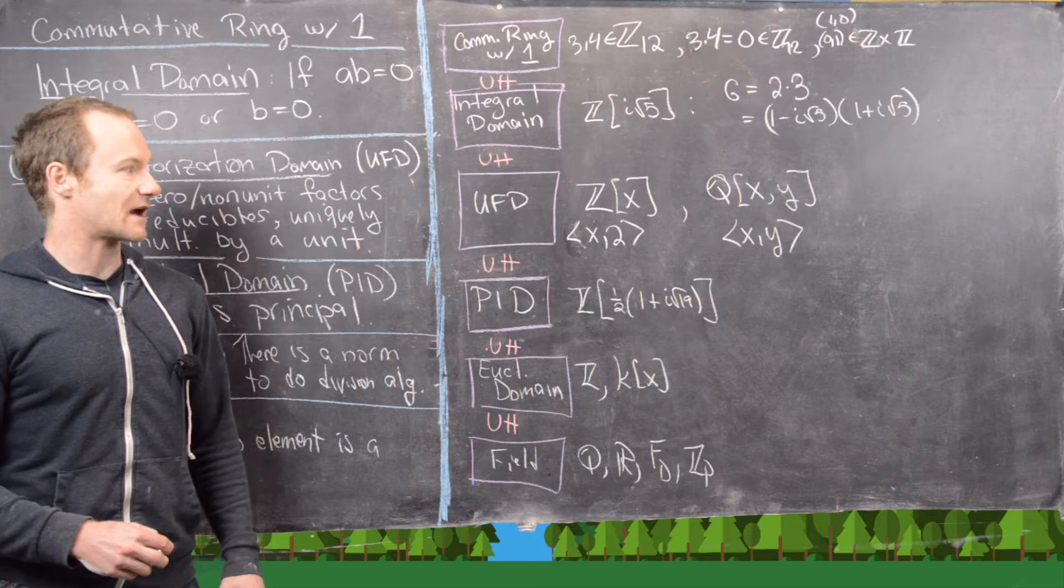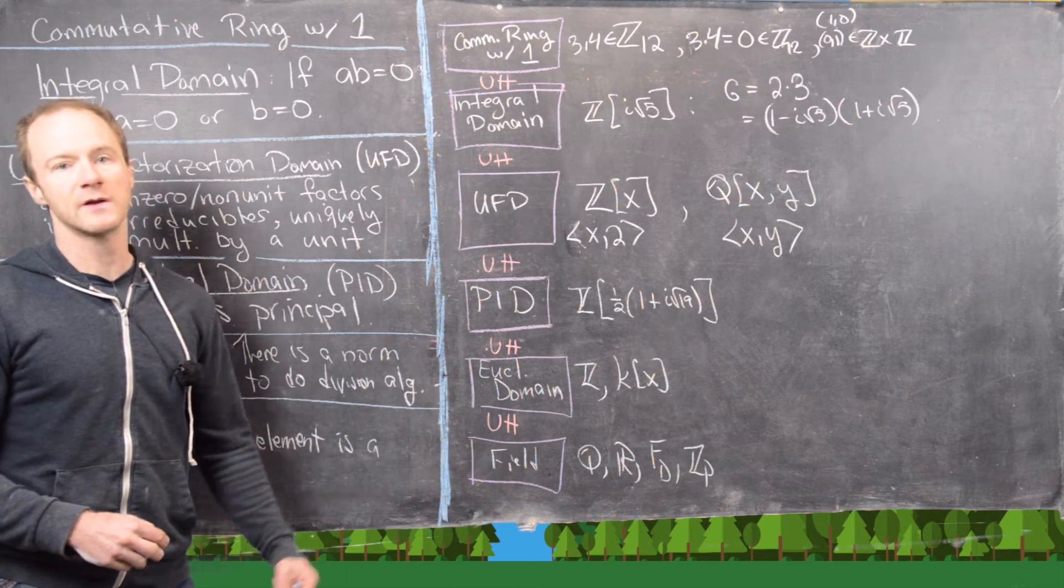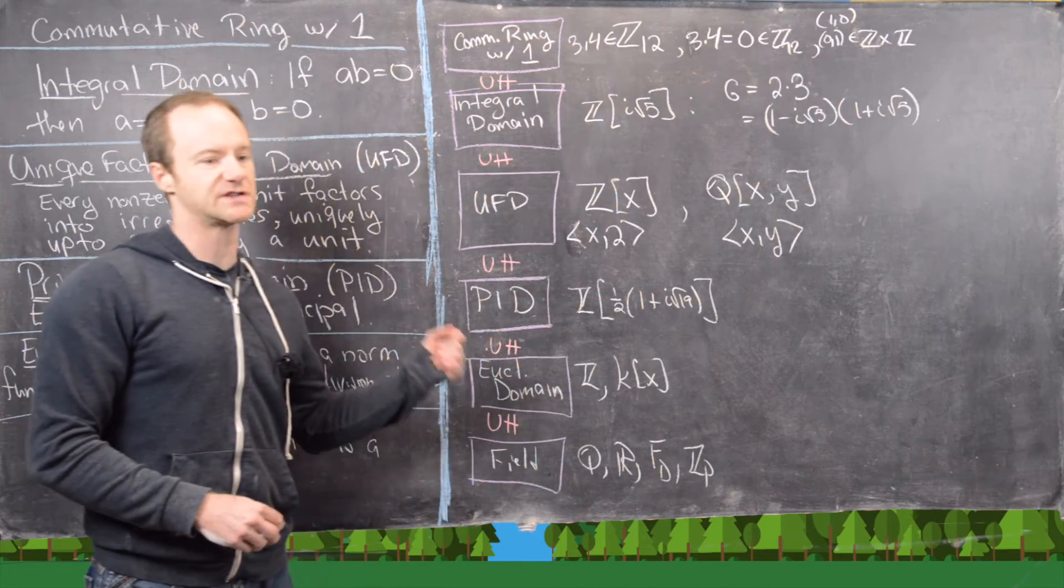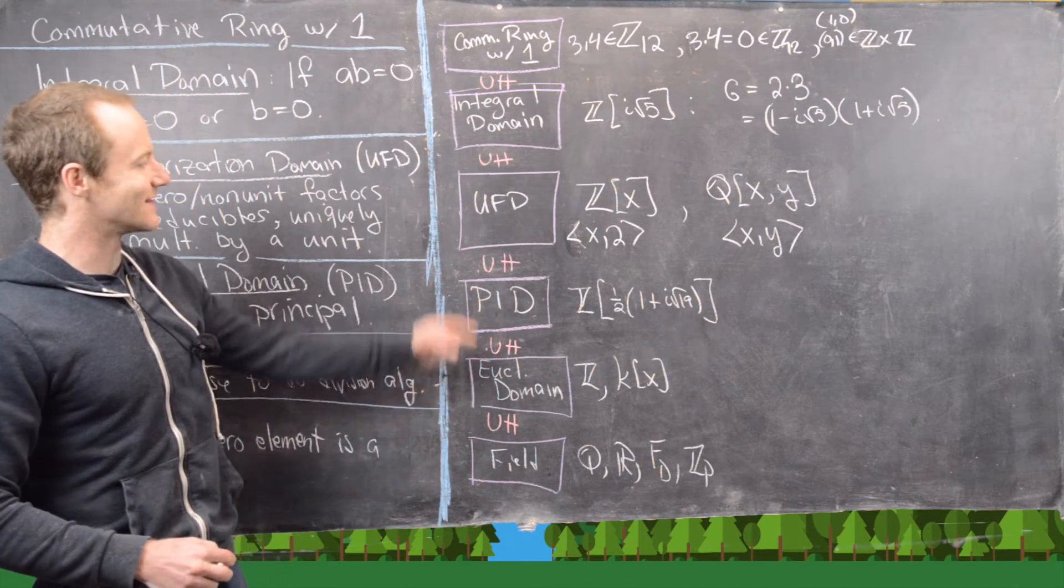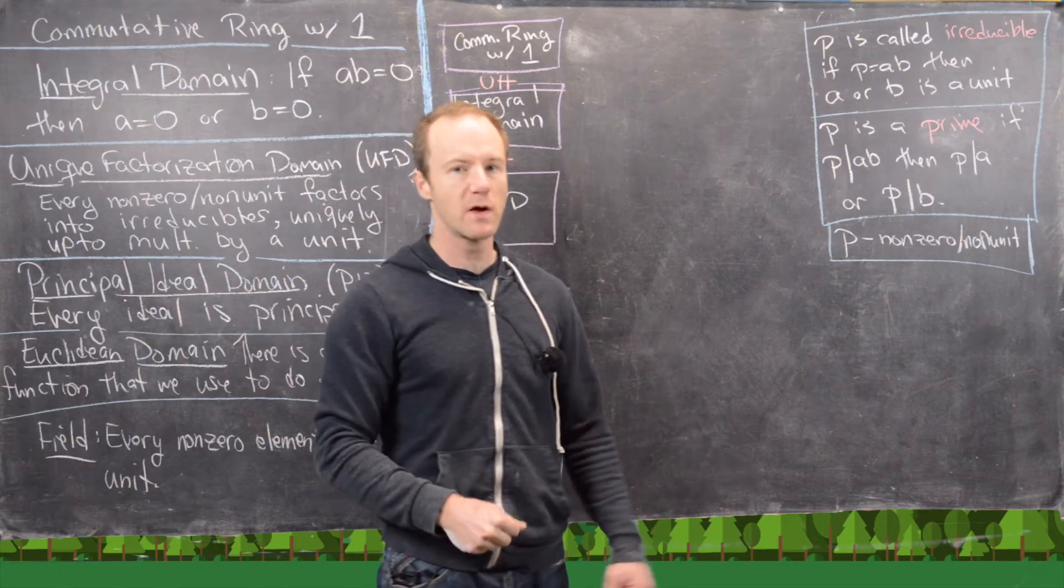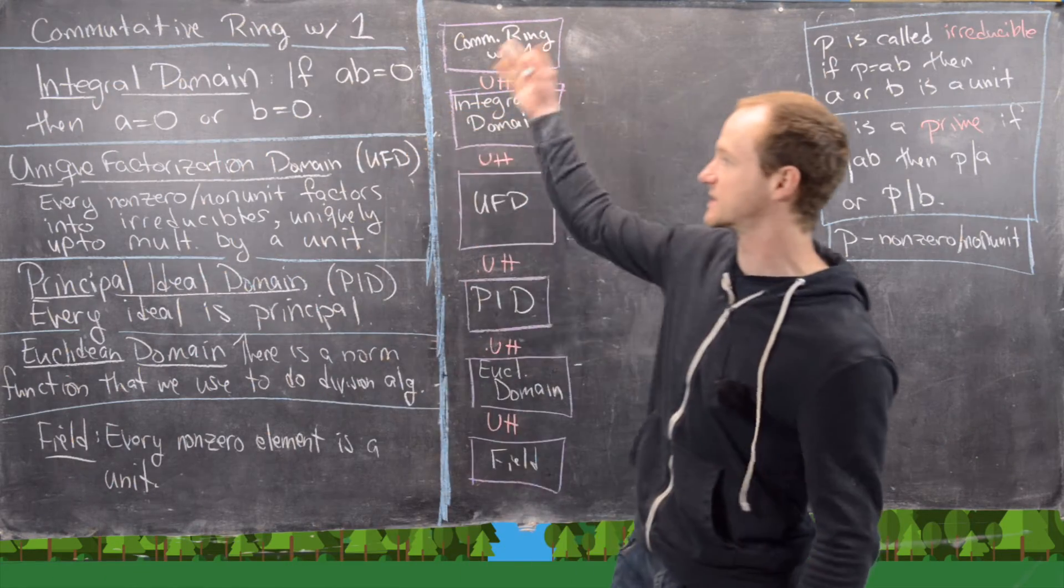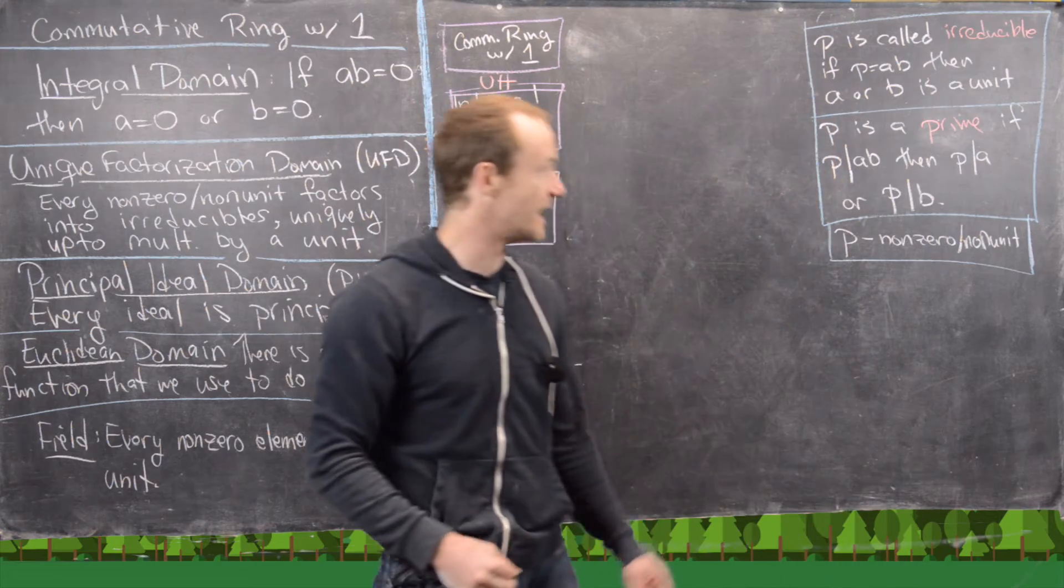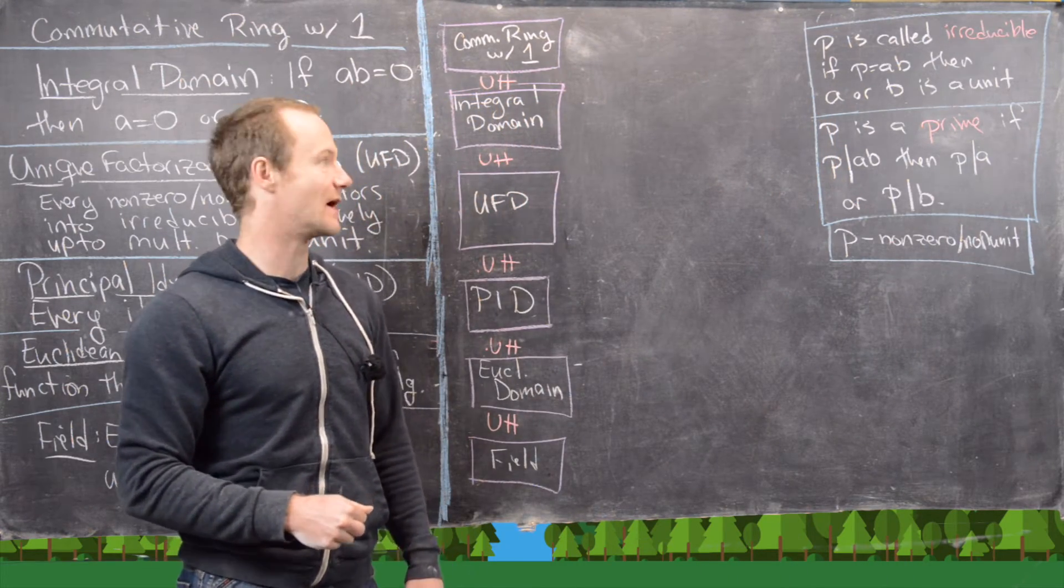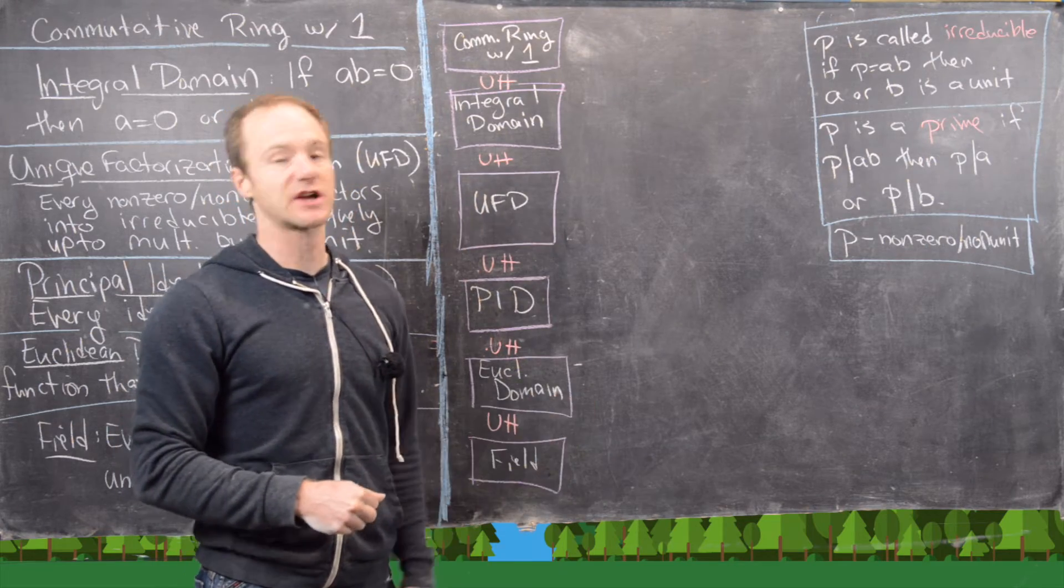So the next thing that I want to do is clean up the board and recall what irreducible elements are versus prime elements and see where that lies on this spectrum of commutative rings down to field. So there's one more thing I want to review about this string of commutative rings with one. And that is the role of irreducible elements and prime elements.